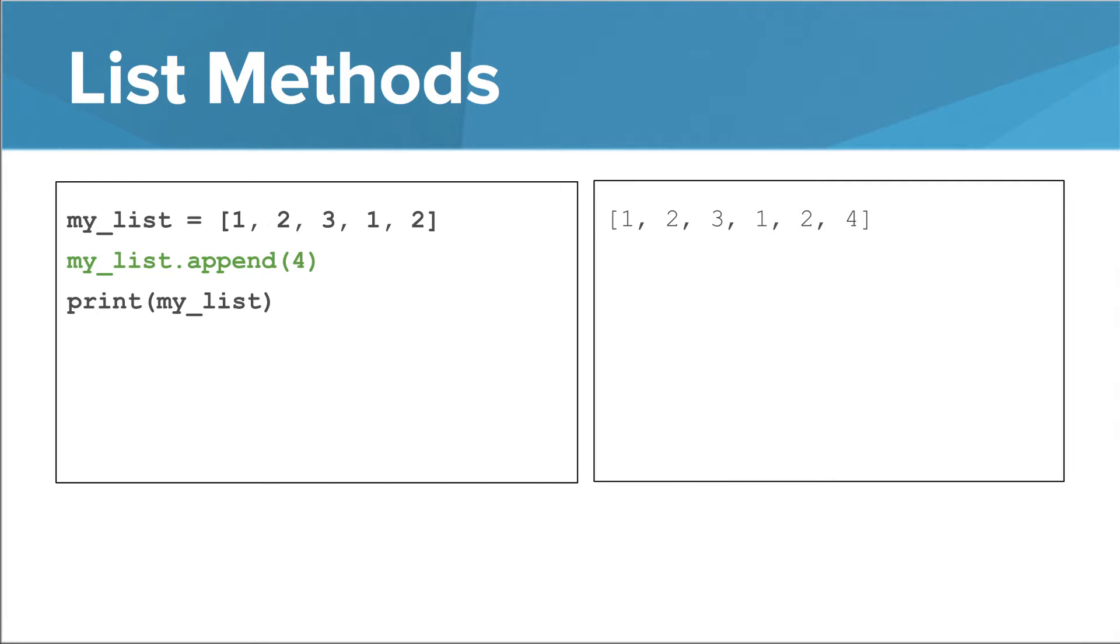Check out the append method. Its profile is similar to that of count. You call it on a list, and you give it a single argument. What it does is it takes that argument and sticks it on the end of the list. You can call it multiple times, and it will append something each time. You can append strings, too.